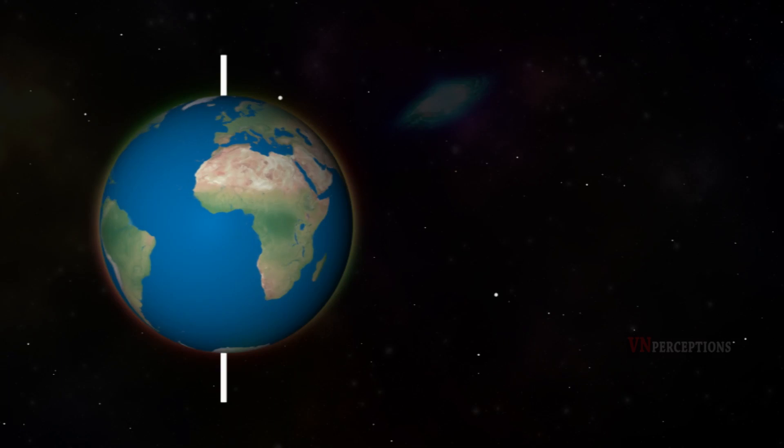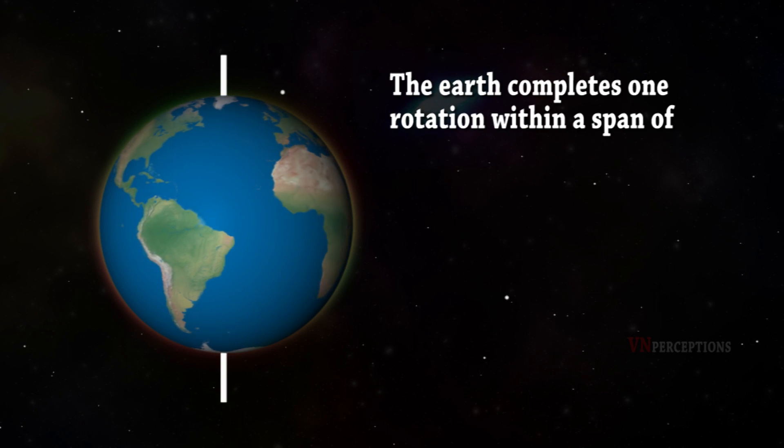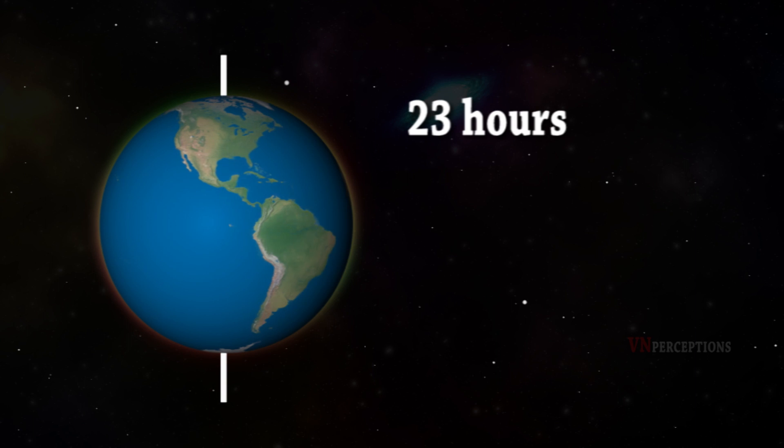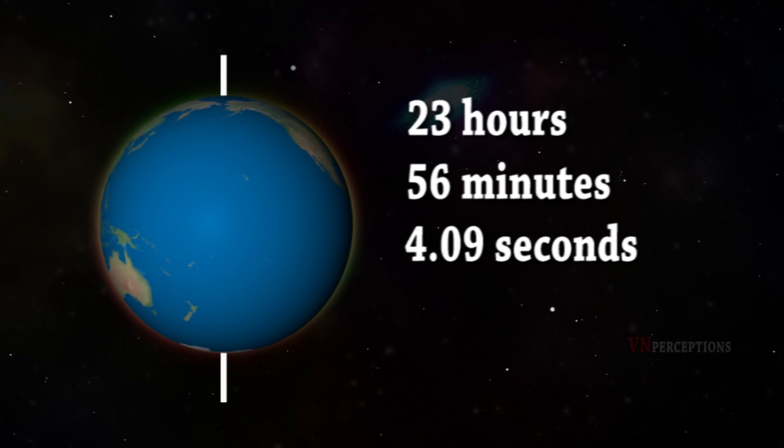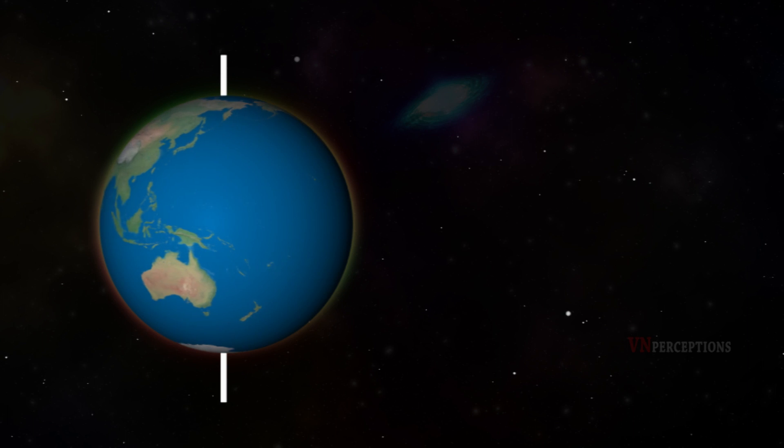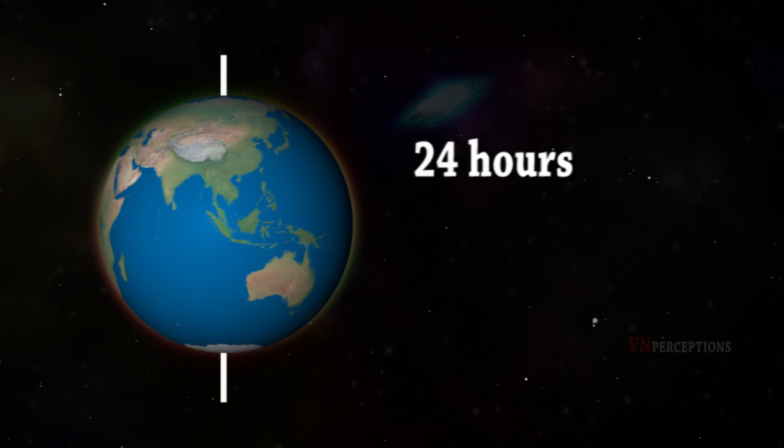The Earth completes one rotation within a span of 23 hours, 56 minutes, and 4.09 seconds. Roughly, it is taken as 24 hours.